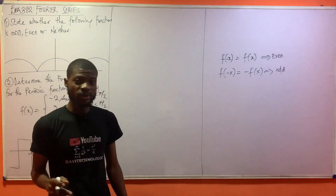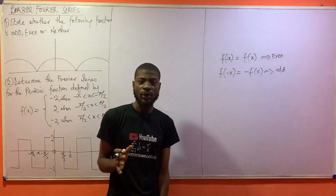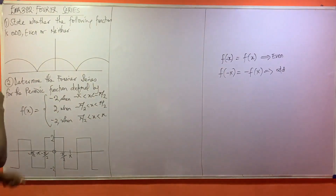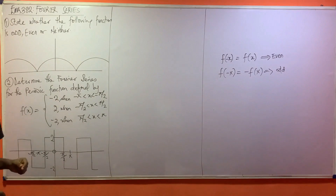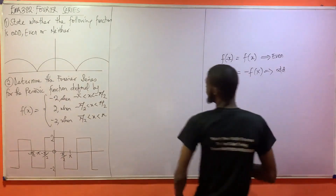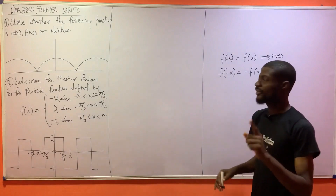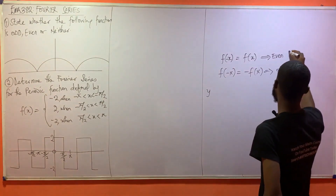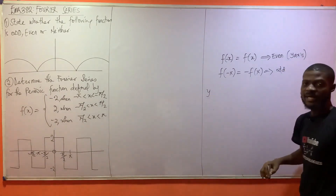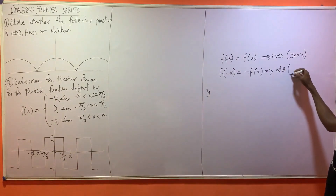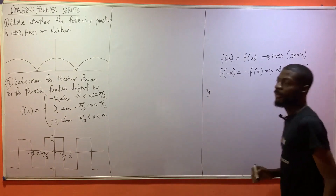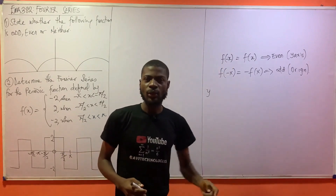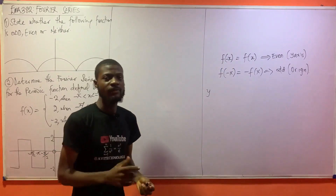If neither condition is satisfied, the function is neither. Graphically, how do we know if a function is even or odd? If the function is even, it is symmetric about the y-axis. If it is odd, it is symmetric about the origin. You can watch my video on even or odd functions — I will link it up.